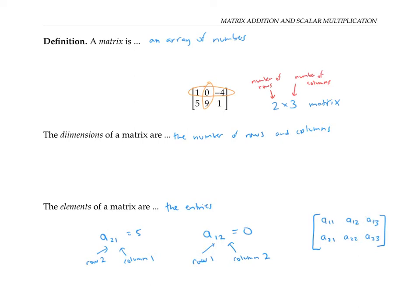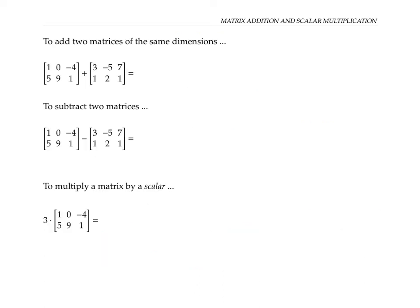The first index in these double indexes tells you the row number, so each of these numbers is in row one. The second index tells you the column number. To add together two matrices of the same dimensions — here dimensions two by three — we do just what you would think: we add the corresponding elements together.